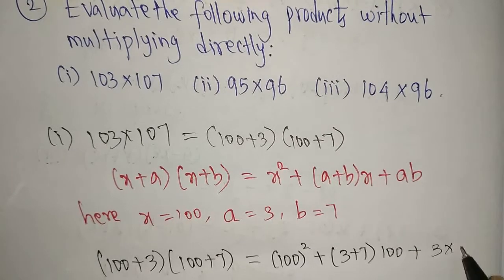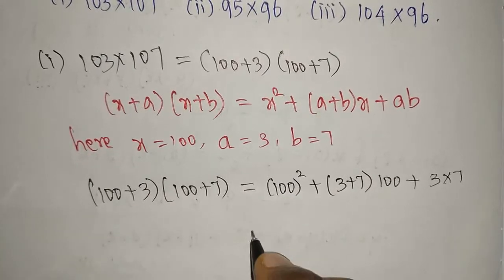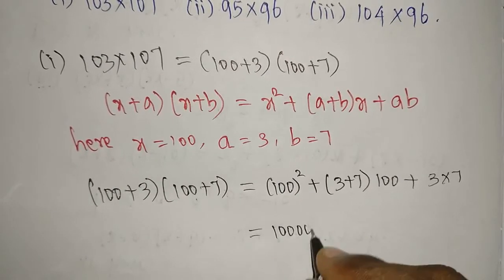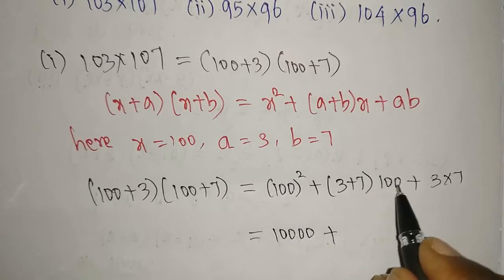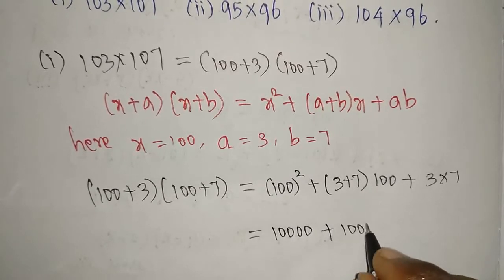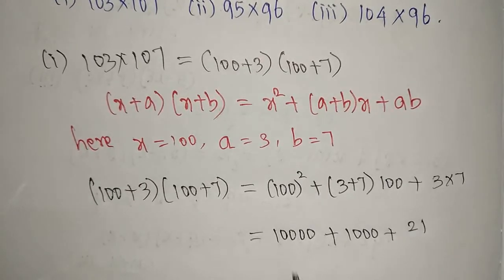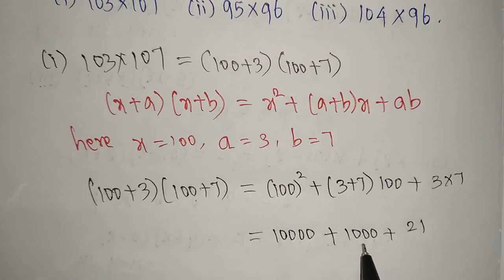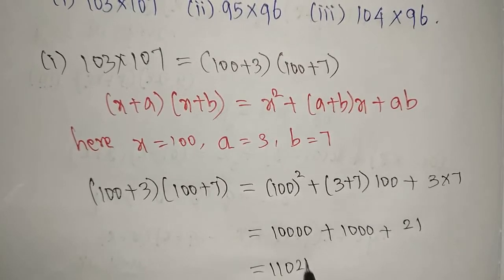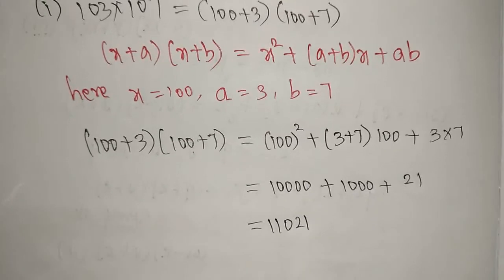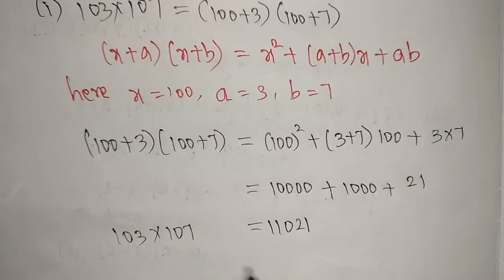Now we simplify: 100 squared is 10,000. Plus 3 plus 7 is 10, so 10 into 100 is 1,000. Plus 3 times 7 is 21. So 10,000 plus 1,000 is 11,000, plus 21 gives us 11,021. That is our required answer for 103 into 107.